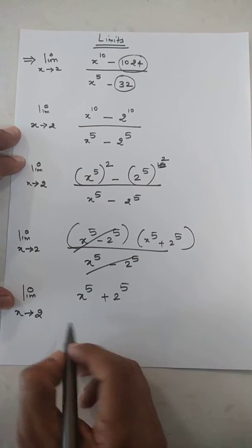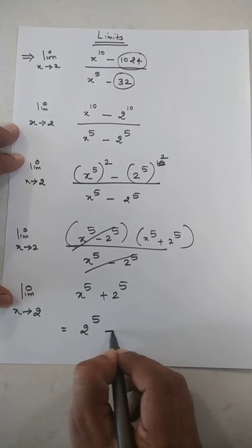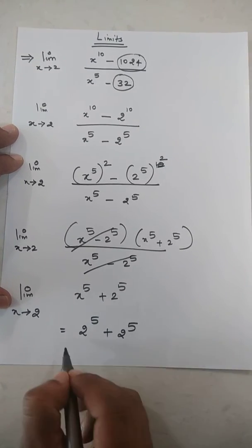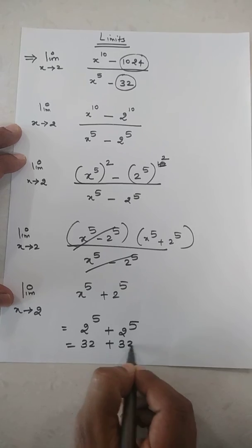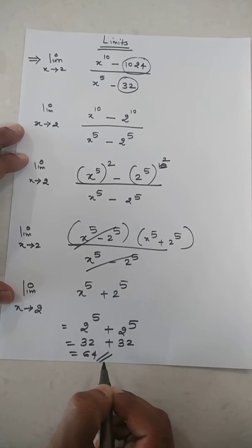So it will be 2 raised to 5 plus 2 raised to 5. So we know that 2 raised to 5 is 32 plus again 32. It is equal to 64. Thank you.